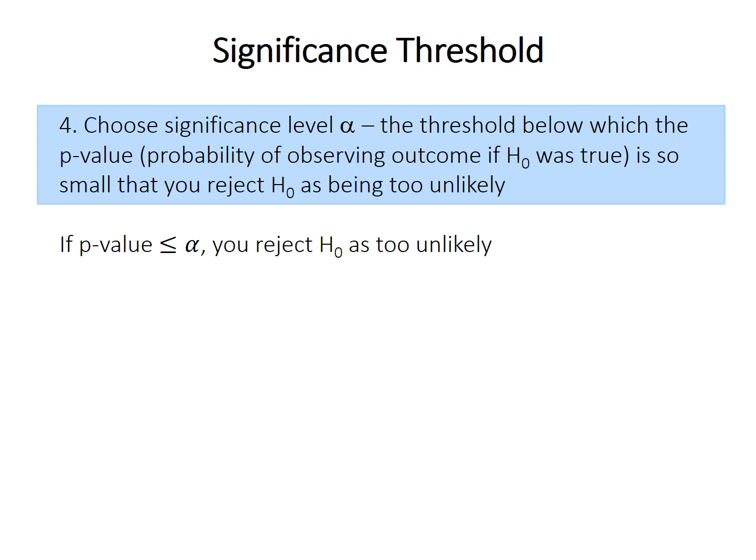So the p-value is just a probability. On its own, it doesn't allow you to make any decisions. You need to pair the p-value with some predetermined significance level called alpha. So alpha is the threshold, and if the p-value is lower than or equal to that threshold, we can conclude that the null hypothesis is unlikely enough that we can reject it.